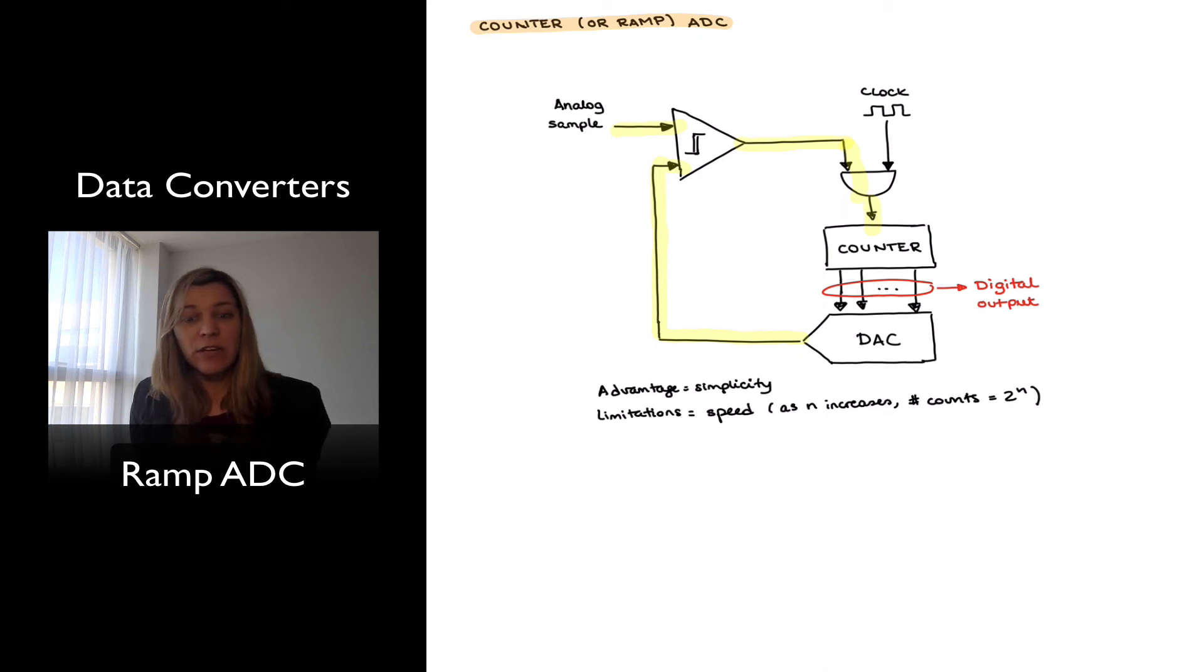There is a slight variation of this circuit, which is referred to as the tracking ADC, which basically starts from the assumption that a change in the analog input is going to be small from one sampling instance to the next.